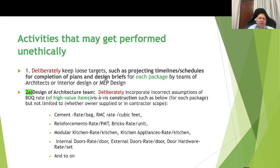Regarding activities that may get performed unethically: first, deliberately keeping loose targets such as project timelines or schedules for completion of plan and design briefs for each package by the teams of architects, interior design, and MEP design functions. Second, the architecture team deliberately incorporating incorrect assumptions about rates, particularly for high-value items — for example, rates for cement per bag, RMC per cubic foot, reinforcement per metric ton, or brick rates per unit may be kept on the higher side, as may modular kitchen rates or kitchen appliance rates per kitchen. Interior doors — rate per door, external doors, and door hardware — may similarly be kept on the higher side.